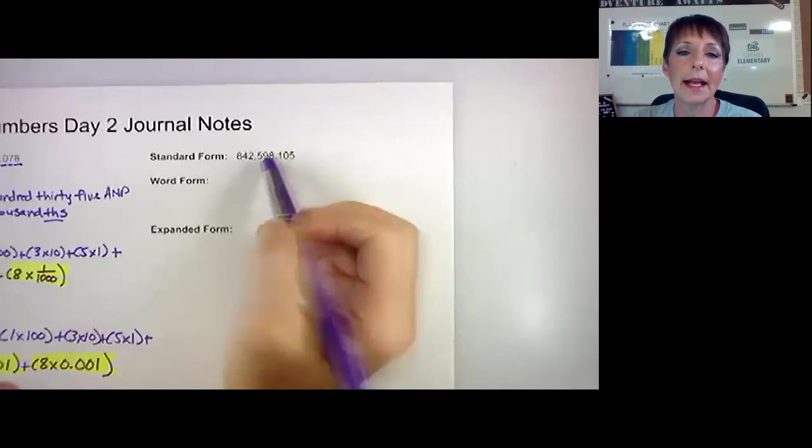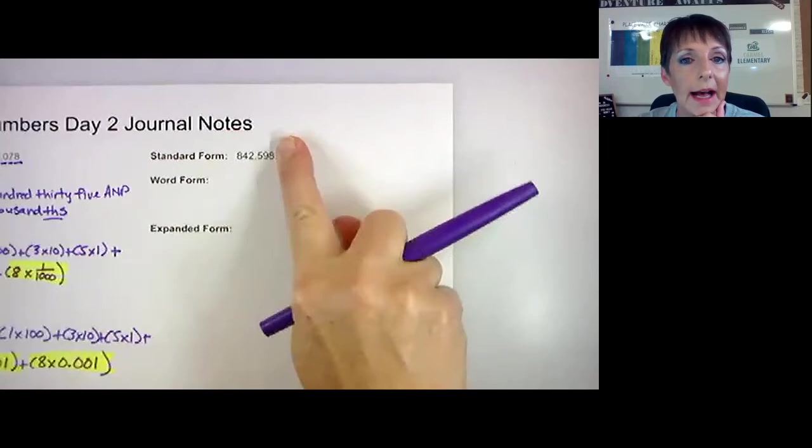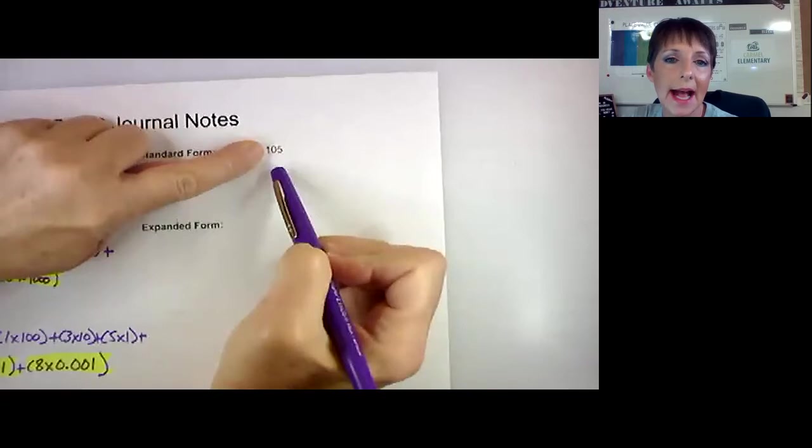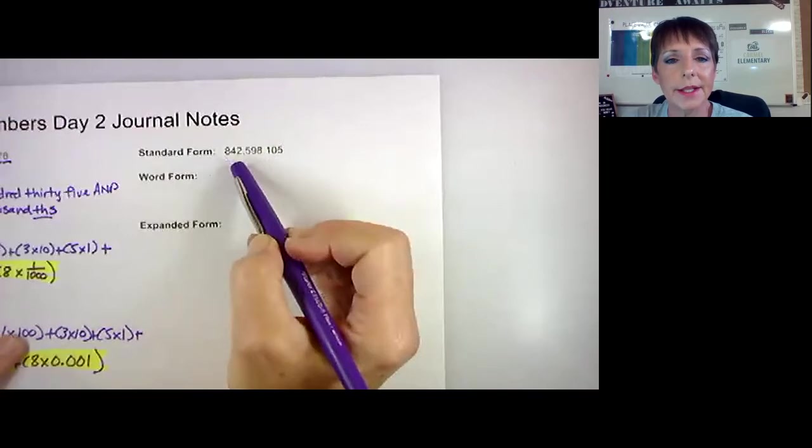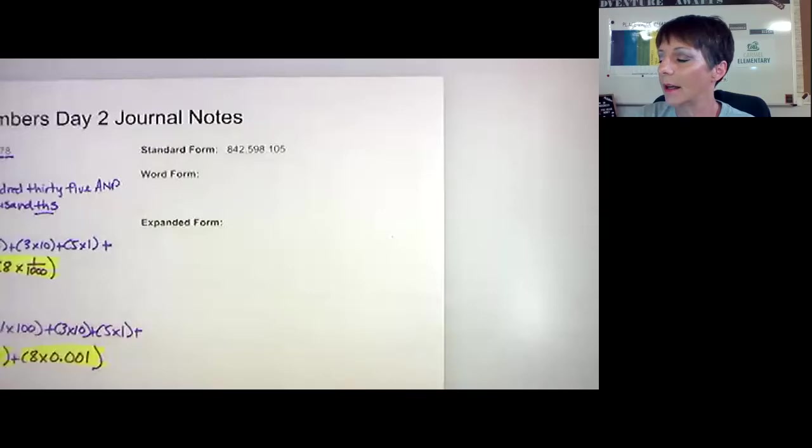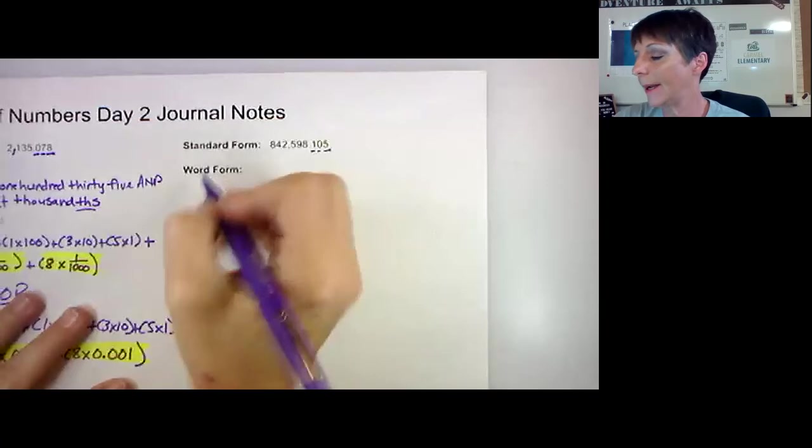Let's look at our last example for today. I would say this as, if I cover up the decimal part, I can read it easier, right? 842,598, and then if I cover up this side, I would say the back side as 105 normally, right? That's 105. So it is 842,598 and 105, and that lands in the thousandths place. Tenths, hundredths, thousandths. So I'm going to write it exactly like I said it.